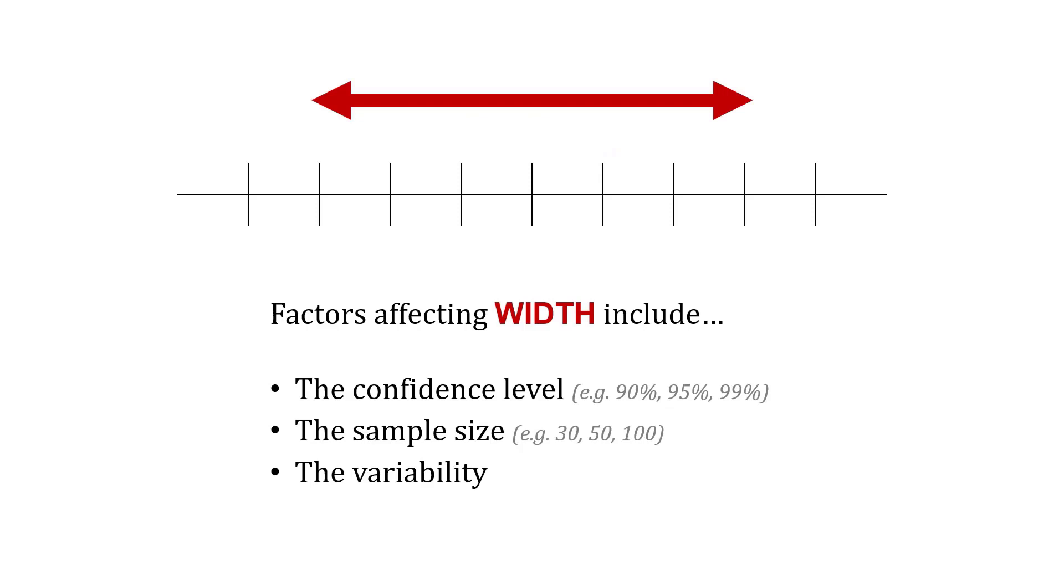Factors that affect the width of our interval include the confidence level. Is it, for example, 90, 95, or 99 percent? Also the sample size, 30, 50, or 100, and also the variability. So the confidence level, the sample size, and the variability affect the width.